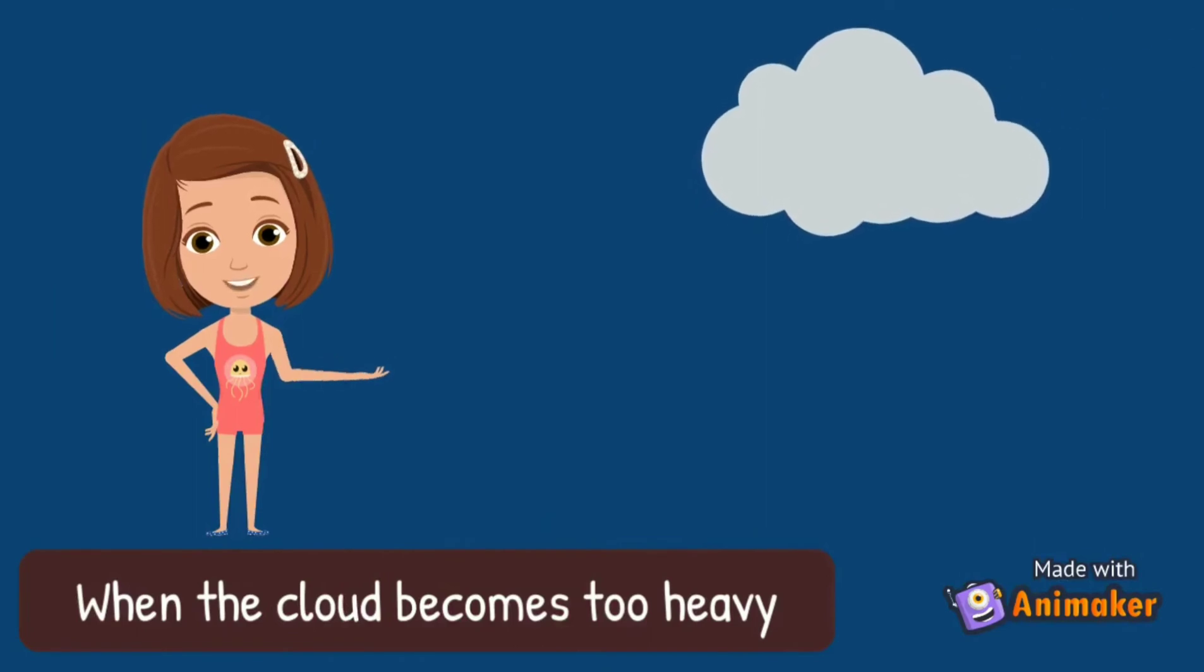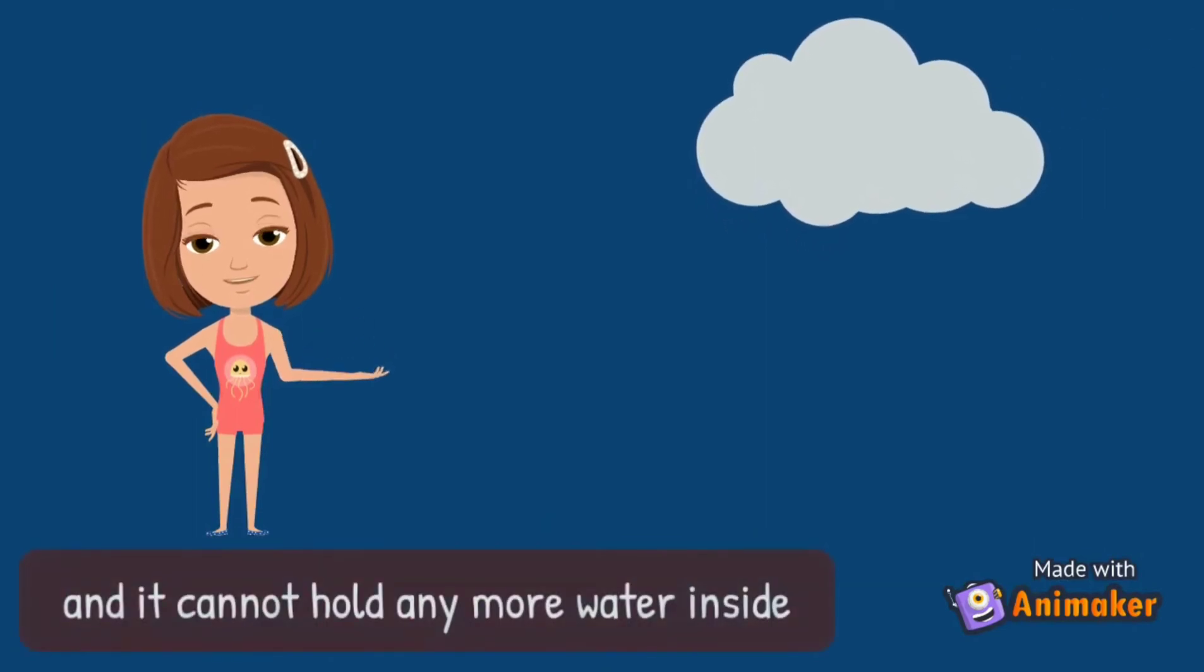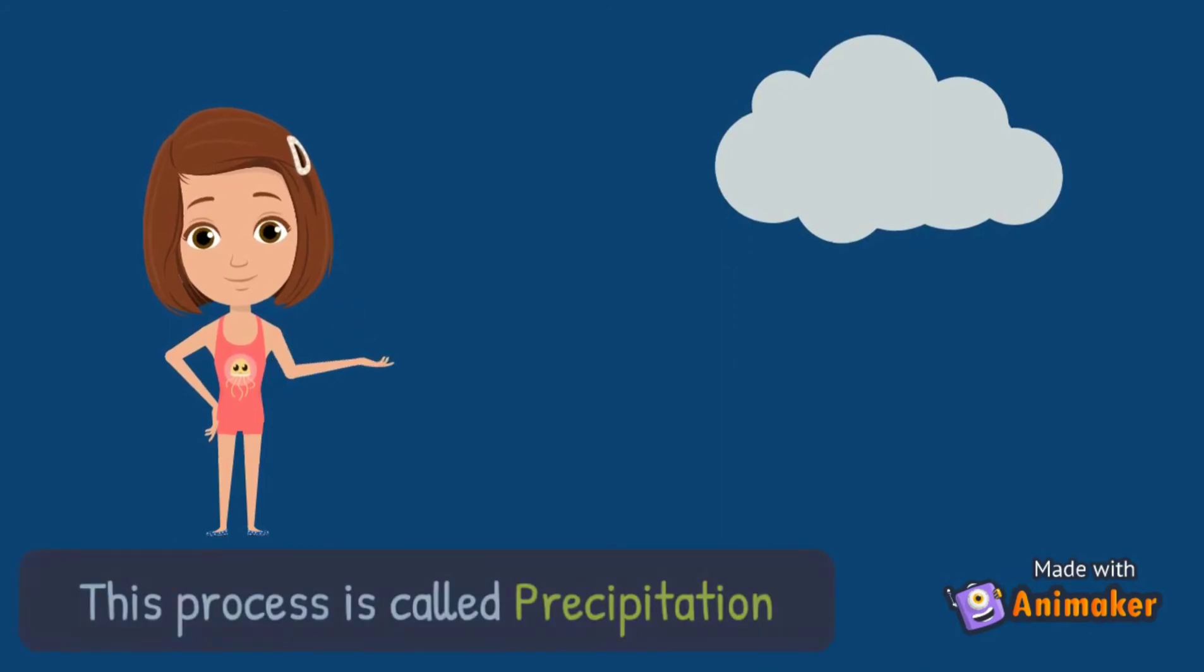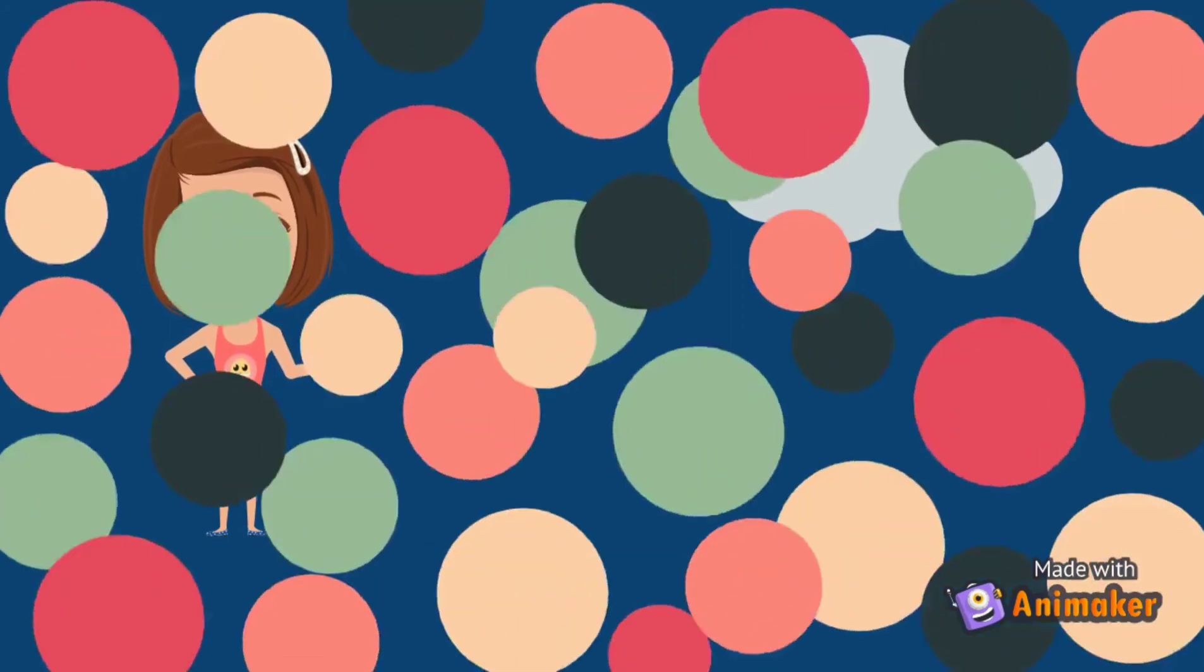When the cloud becomes too heavy and it cannot hold any more water inside, they fall back to the earth in the form of rain. This process is called precipitation.